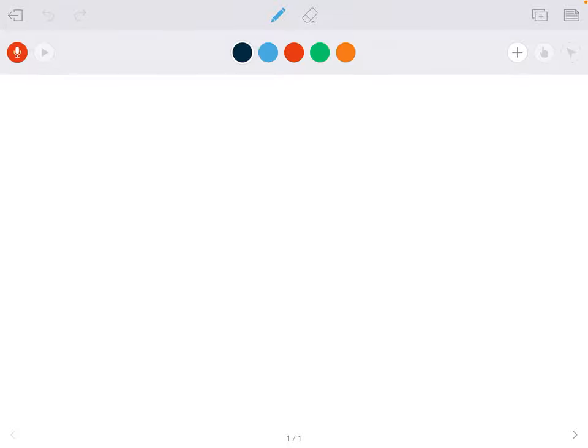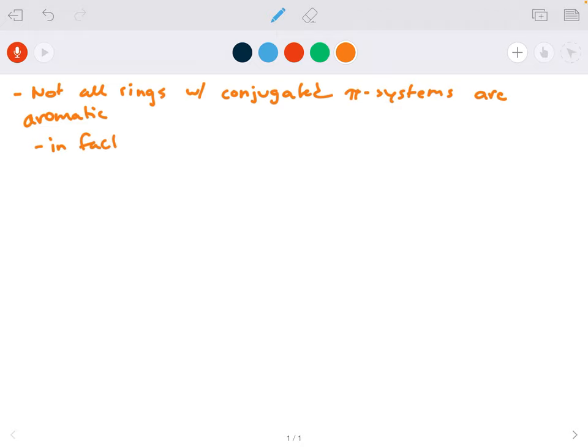In this video, I'm going to discuss Huckel's Rule. So not all rings with conjugated pi systems are actually aromatic. In fact, some are anti-aromatic.